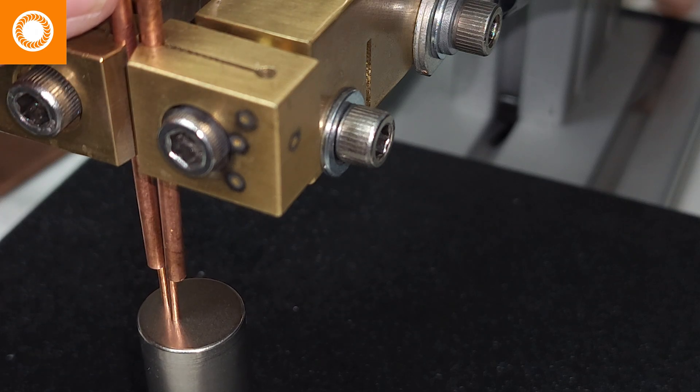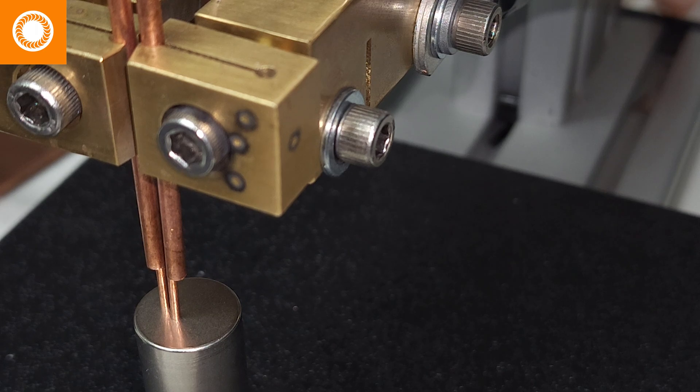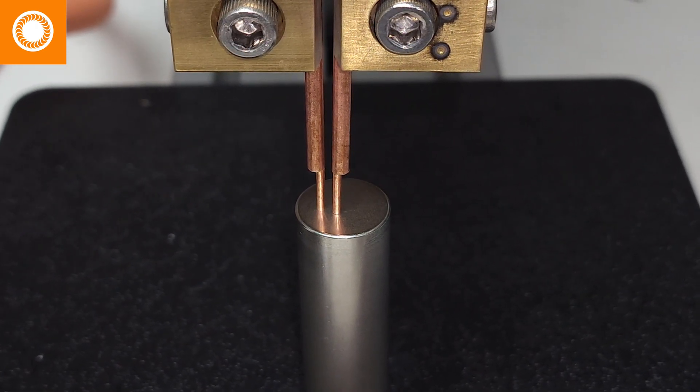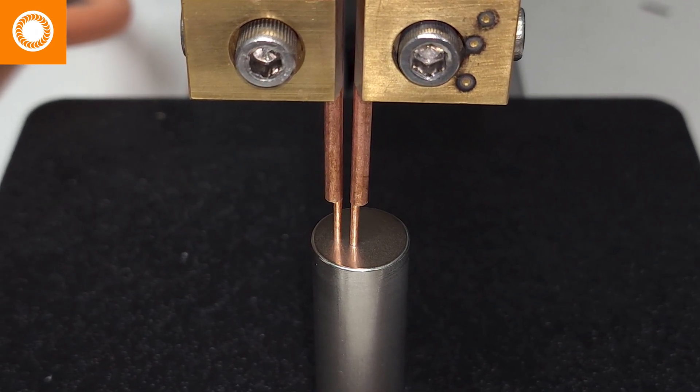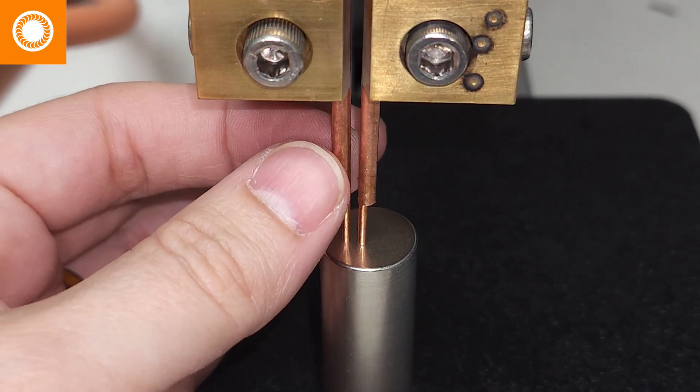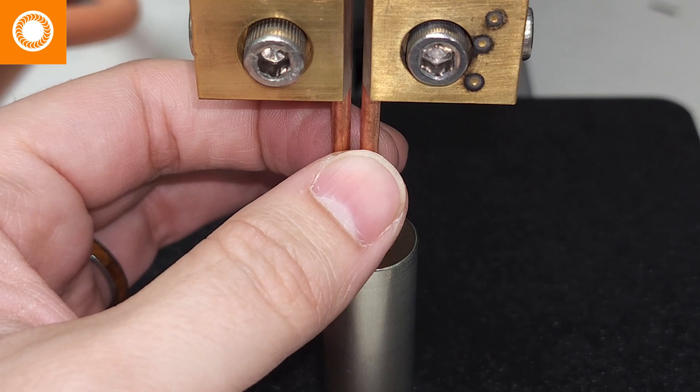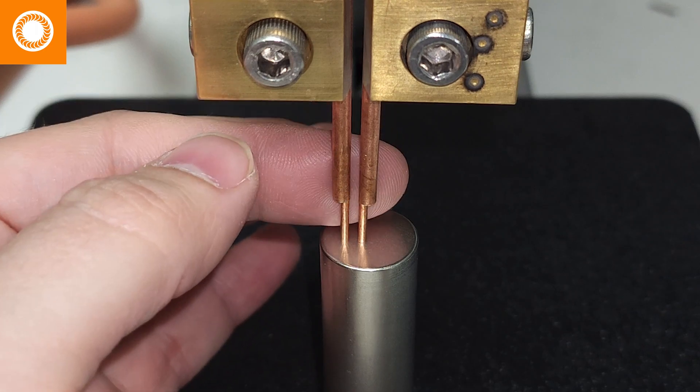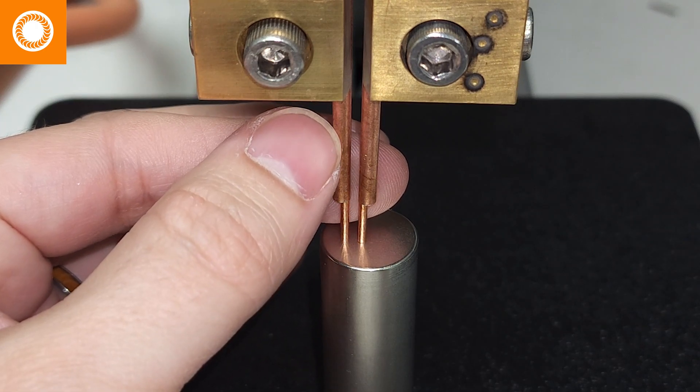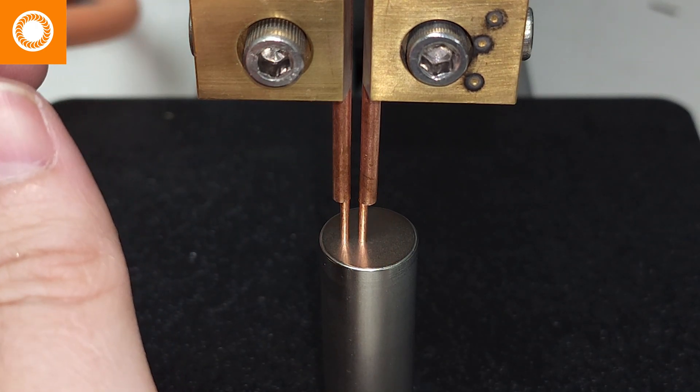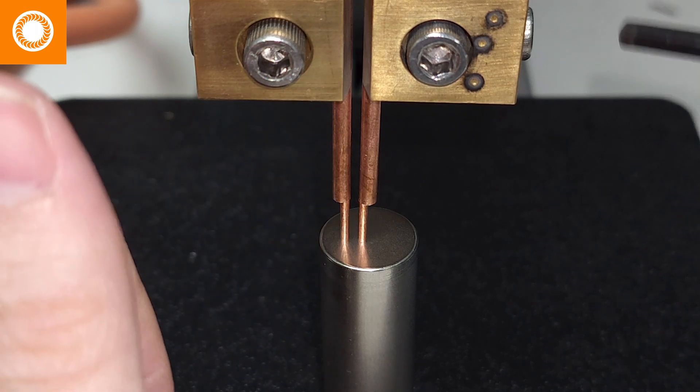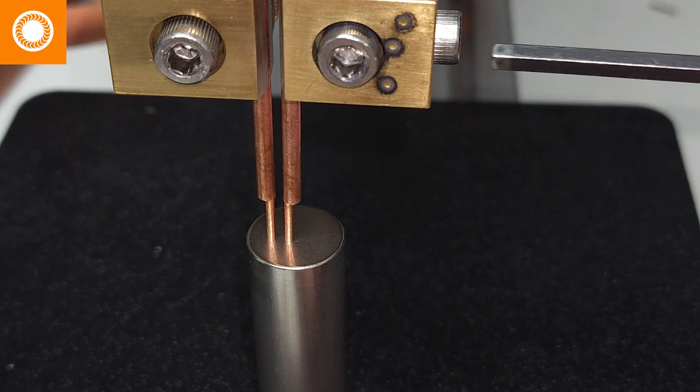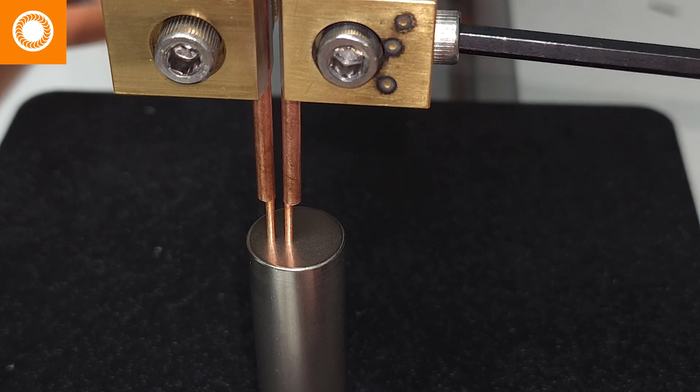I'm going to rotate these electrodes so that they're close to one another. We're going to change that view so we can see that the business end of these electrodes are sitting pretty close to one another. I'm happy with that distance, so I'm going to tighten up this screw to lock that into place.